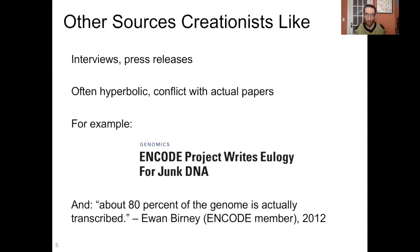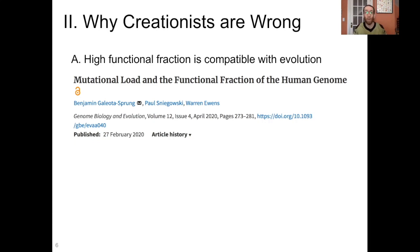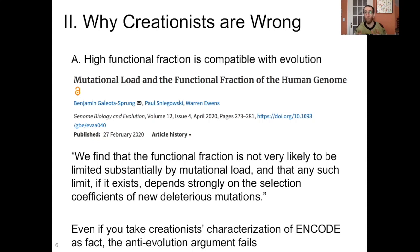Now let's talk about why this creationist argument is wrong. The first thing is that a high functional fraction is perfectly compatible with evolution. You can have a large complex genome that's mostly functional — that's not a problem for evolution to deal with. There's a paper on this, 'Mutational Load in the Functional Fraction of the Human Genome,' published earlier this year. The authors write that the functional fraction is not very likely to be limited substantially by mutational load, and that any such limit depends strongly on the selection coefficients of new deleterious mutations. In other words, the genome can tolerate a lot of mutations — if any are really bad, they'll be selected out. So even if you take the creationist characterization of ENCODE as fact, the anti-evolution argument still fails.